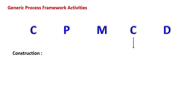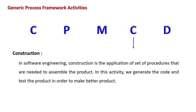Then comes Construction. In software engineering, construction is the application of a set of procedures that are needed to assemble the product. In this activity, we generate the code and test the product in order to make a better product. Two things are important in the construction activity: the first is generating code, and the second is doing testing so that errors can be removed.